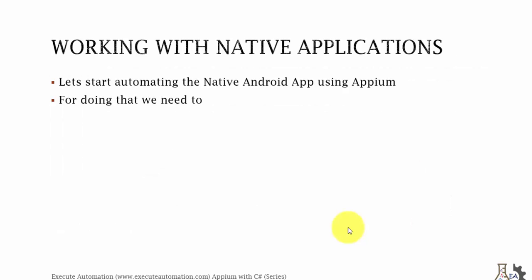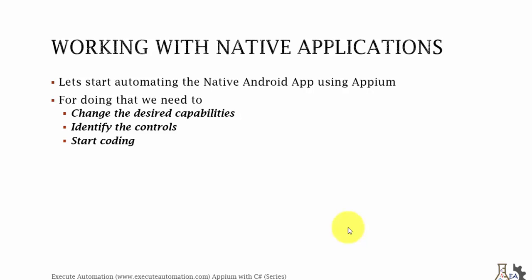We're going to start automating native Android app automation using Appium. For doing that we need to first change the desired capabilities, identify the controls, and start writing the code. It's pretty much the same template for all different kinds of application types — web, native, or hybrid — but there are some minor changes between each application type and also between Appium with C# and Appium with Java.